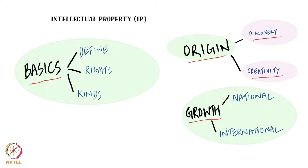So, you first find intellectual property rights being accepted by countries at the national level, and then we also see movement at the international level.